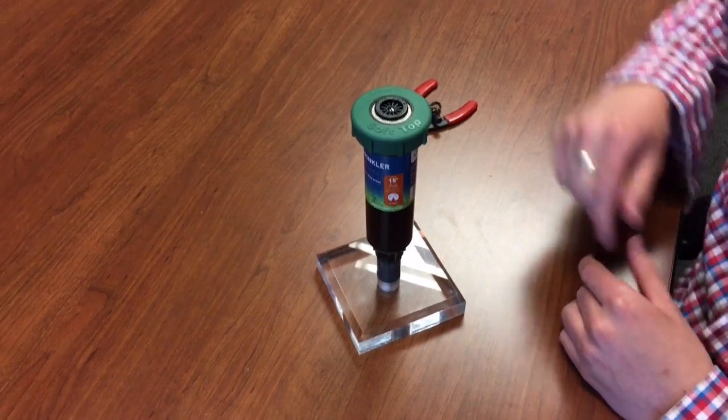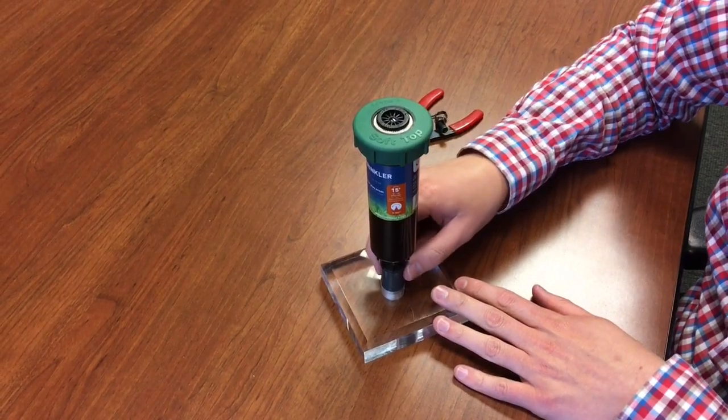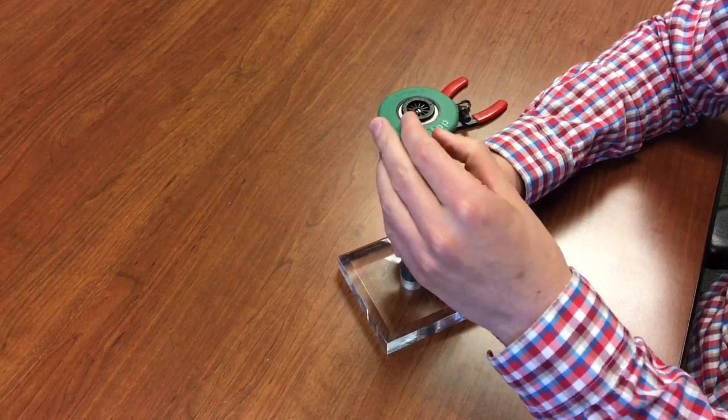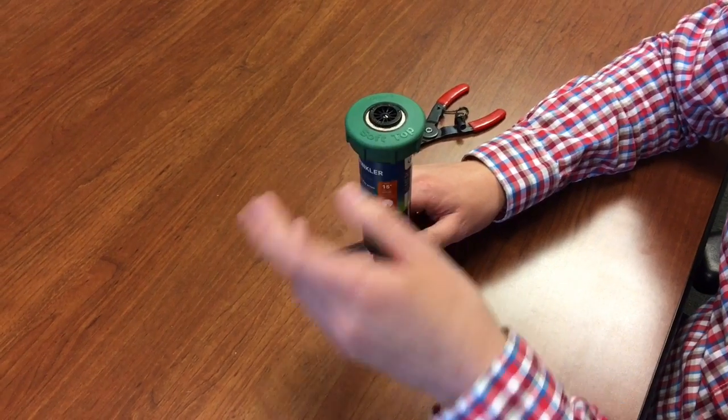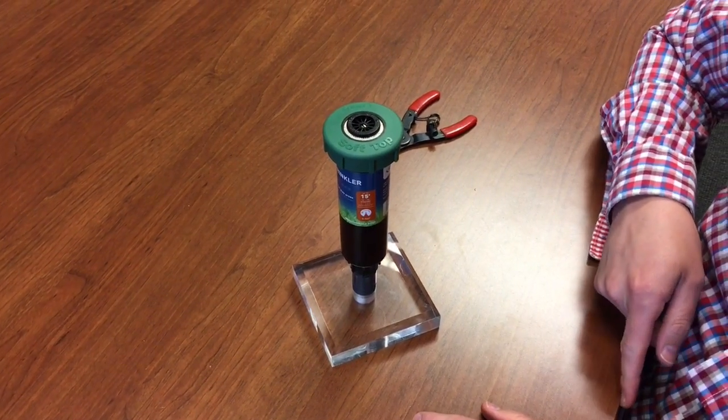In this video we're going to show you how to adjust our adjustable nozzles. Here we've got one in a traditional pop-up. This is the soft top that has a softer cap that can be used in play areas for children so they don't injure themselves if they happen to fall on the sprinkler.